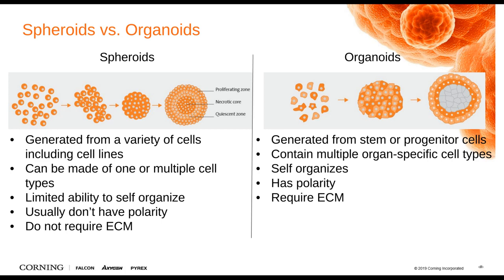There's still some debate as to what is truly defined as an organoid versus a spheroid. Spheroids in general are more simplistic 3D structures that arise mostly from cell lines or primary cells. Organoids, on the other hand, are generated from stem or progenitor cells and can thus differentiate into multiple cell types that are much more reflective of the organ itself. A spheroid would require multiple cell types to be added for this level of complexity. The organoid self-organizes using cues from the ECM around it, such as Corning Matrigel Matrix, allowing cells to organize similarly to how they would be in vivo. With a spheroid, the 3D structure typically does not self-organize.